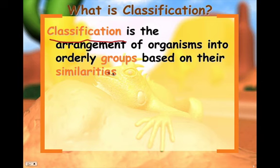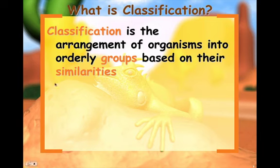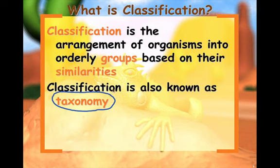Classification is the arrangement of organisms into orderly groups based upon similarities. The categories start very broad and then go to very specific. Classification is also known as taxonomy — a more scientific term, but it means the same thing.